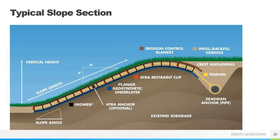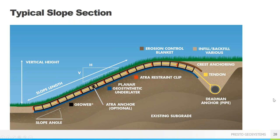Here's what a typical cross-section of a slope protection would look like, showing some of the anchoring options including stakes and the tendon system. The tendon is typically tied off to either a dead man pipe or an earth anchor at the crest, depending on how much room you have up there. You can see the tendon clips spaced periodically down the slope.